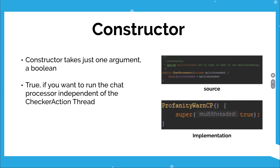First, we will need to implement the constructor. The constructor just takes one single argument which is a multithreaded boolean. If you want to run the chat processor independent of the chat correction thread, just keep it true.